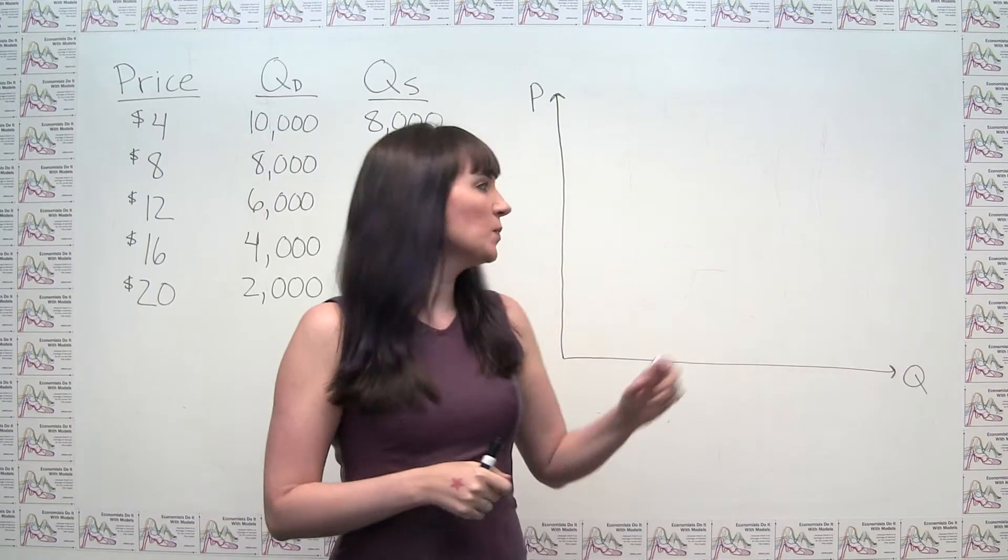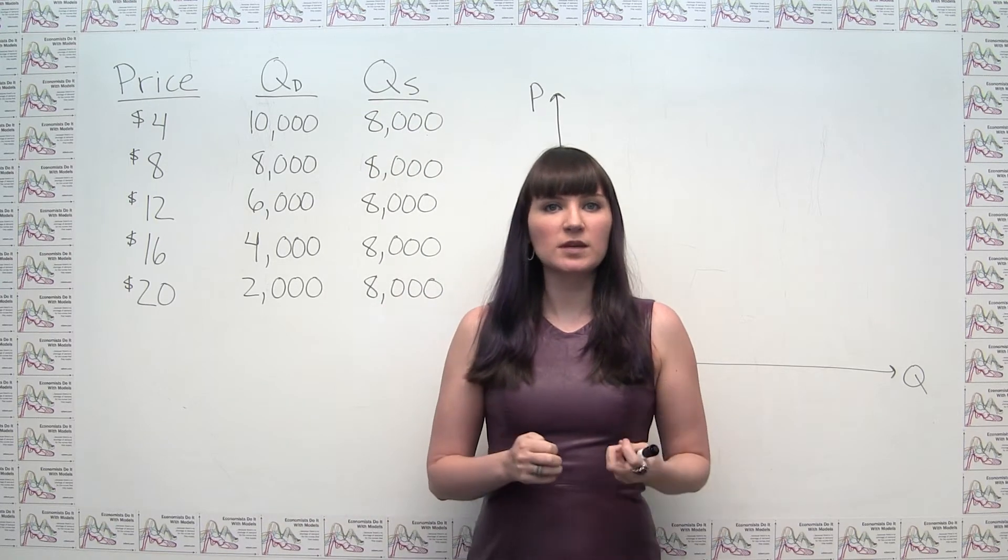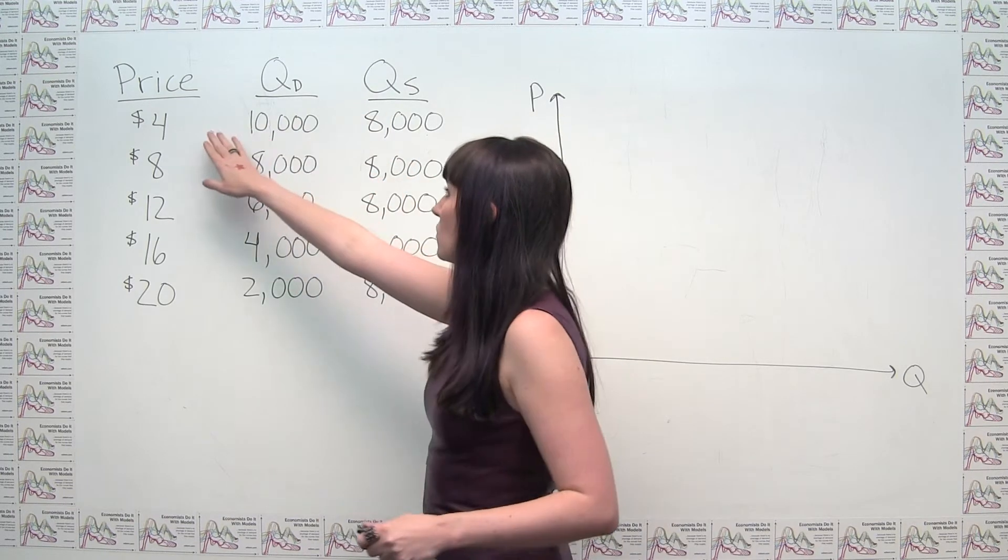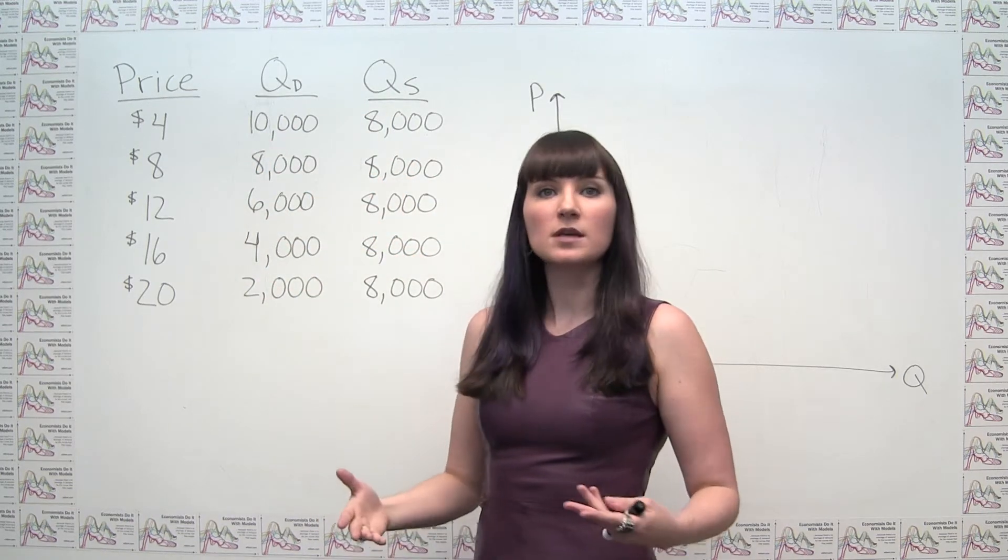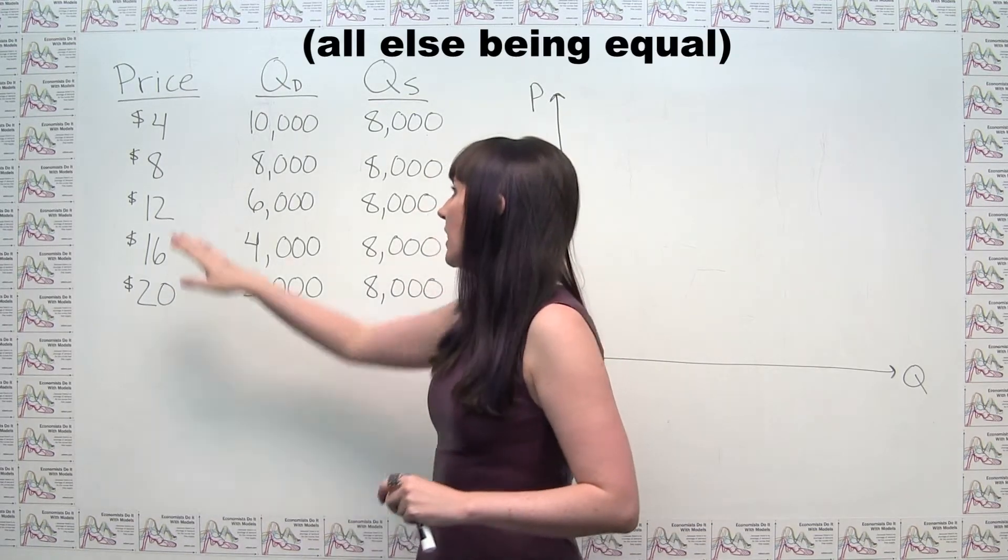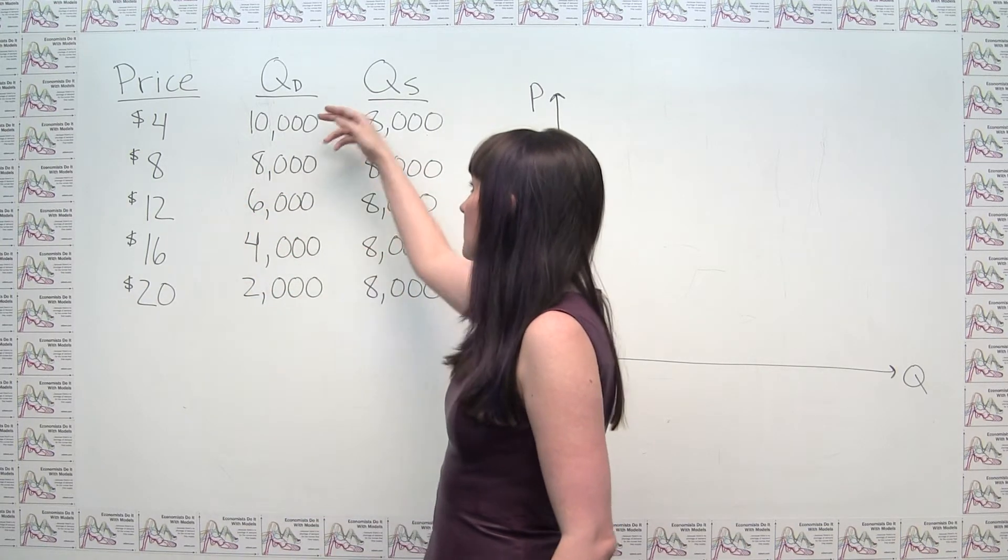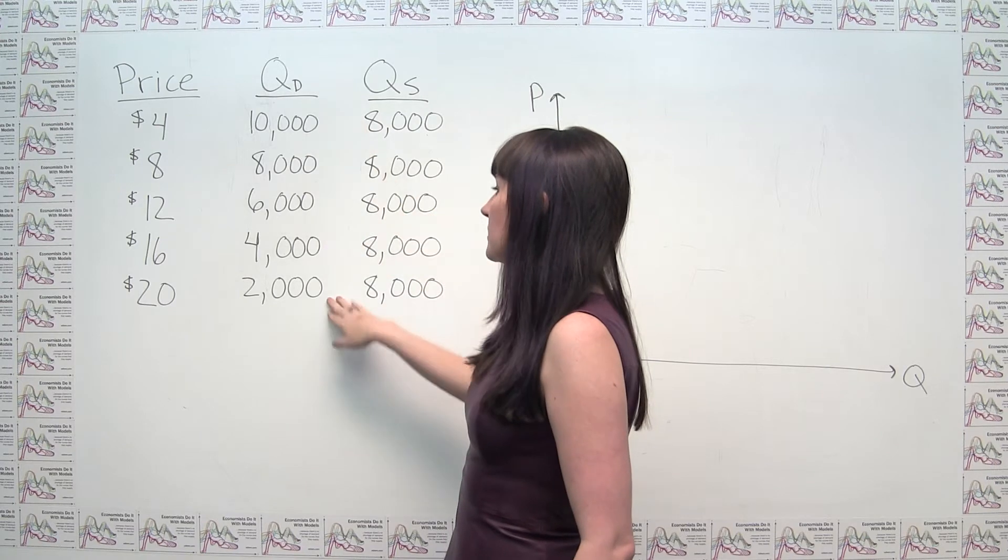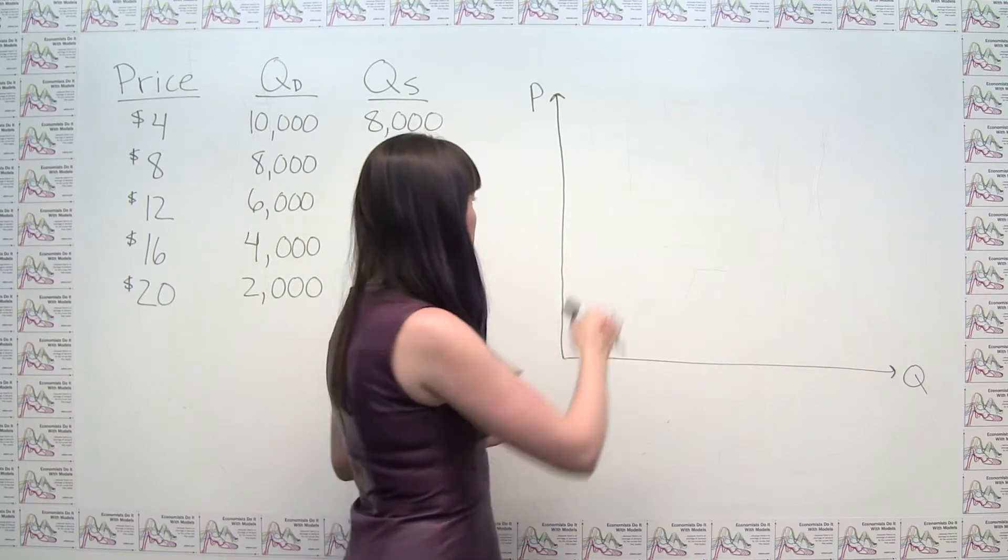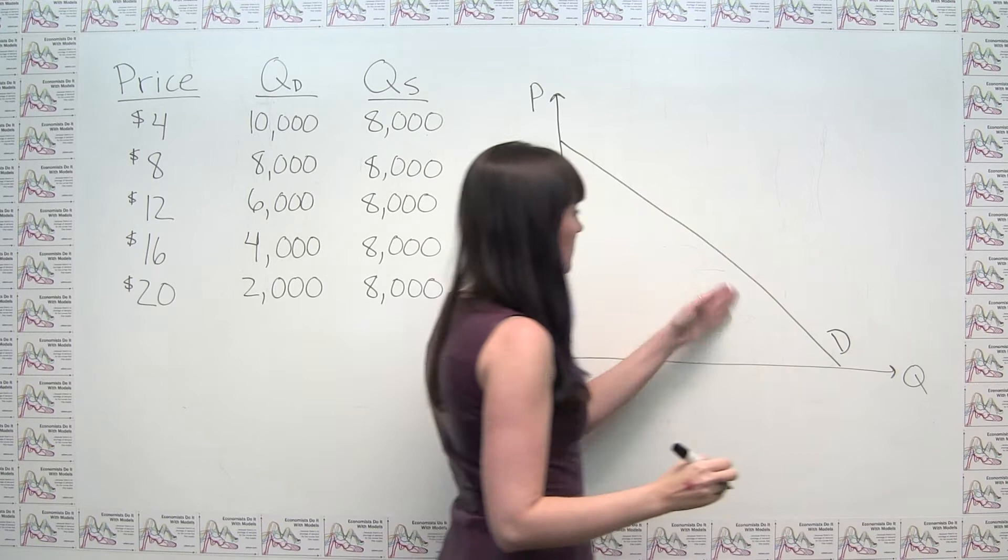But for the purposes of just doing this on the board, let's just make sure that we know, roughly speaking, what our demand and supply curves look like. So if we look at the demand curve here, we'll notice that the law of demand holds. There's an inverse relationship between price and quantity demanded in that as the price goes up from $4 to $20, the quantity demanded goes down from 10,000 to 2,000. So at least in a general sense, we're going to see a demand curve, as we would expect, that's downward sloping.